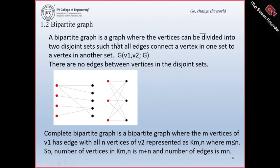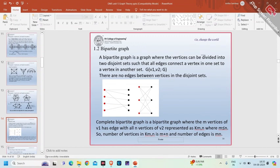Next is a bipartite graph. A bipartite graph is a graph where the vertices can be divided into two disjoint sets such that all edges connect a vertex in one set to a vertex in the other set. It is represented as g(v1, v2) where v1 and v2 are the two partitions of the vertex set. So v1 union v2 forms the original set, there are no common vertices between v1 and v2, and E is the edge set.